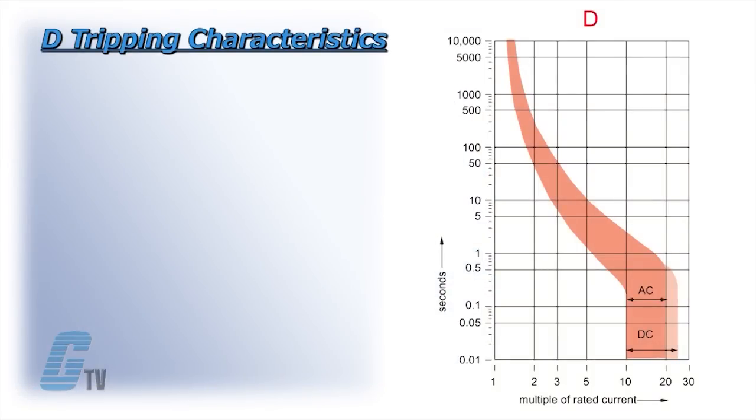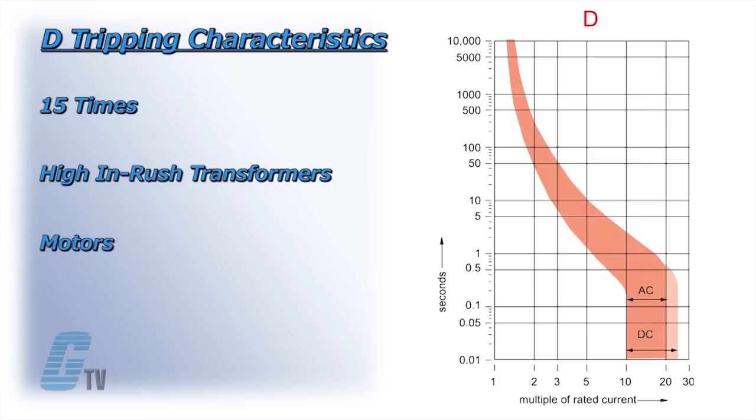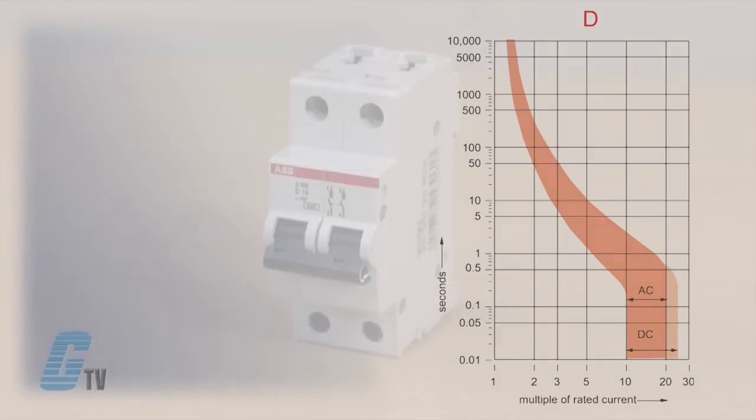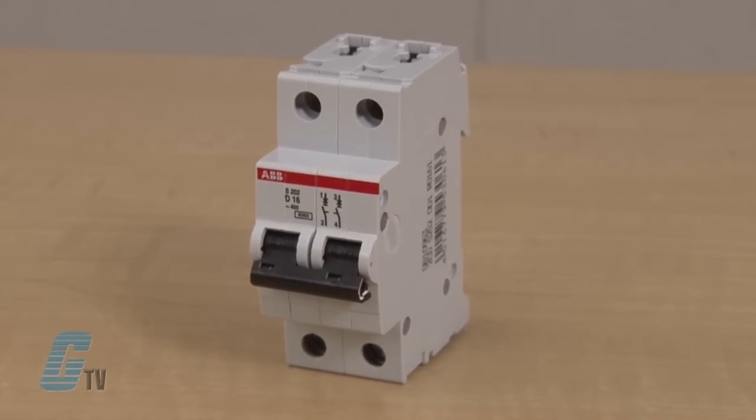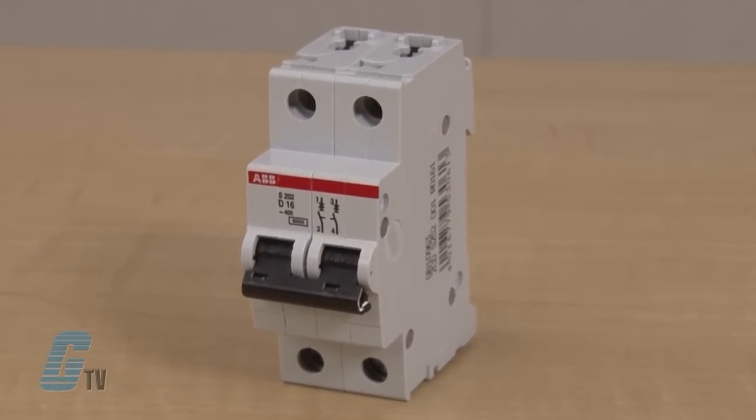The D tripping characteristic has a new magnetic trip action with an instantaneous trip point of approximately 15 times the breaker rating. The S200 D breaker can be a good protective solution for applications involving high in-rush transformers, motors, and other high inductive systems. The S200 D is also suitable for any application where a high instantaneous trip point is desired.